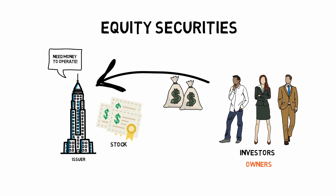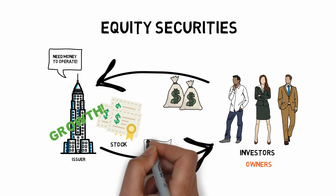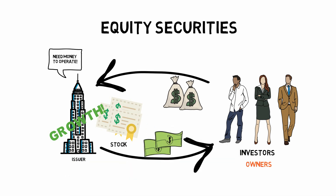Being a partial owner, the investor can profit from the company's growth. Whenever the company distributes a dividend, the investor will be entitled to the dividend proportional to their ownership. Keep in mind the issuer does not necessarily need to issue dividend payments.